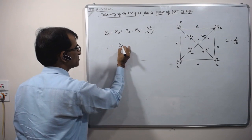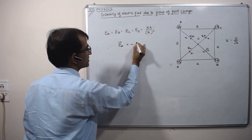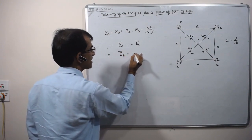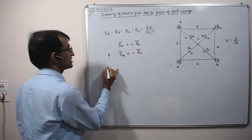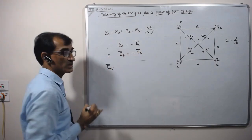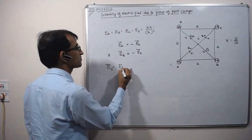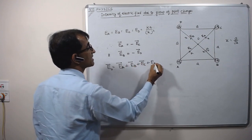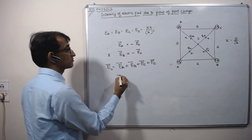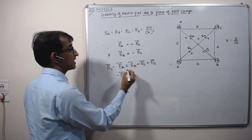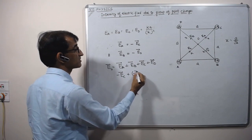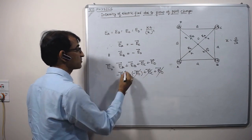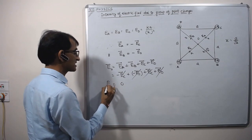Since all charges are equal and the distances from each corner to the center are equal, the magnitudes of all four fields are equal. Electric field due to A is equal and opposite to electric field due to C. Electric field due to B is equal and opposite to electric field due to D. So these four terms cancel out, and the net electric field at center O is zero, due to symmetry.